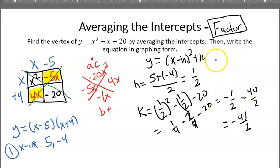And so k is negative 41 halves. So my vertex, write this down here, the vertex is h, k. So my vertex is going to be 1 half and negative 41 halves. So that's my vertex. That's step 2.